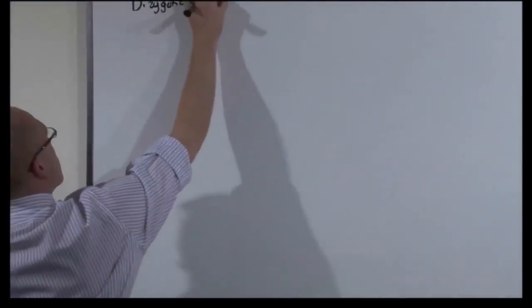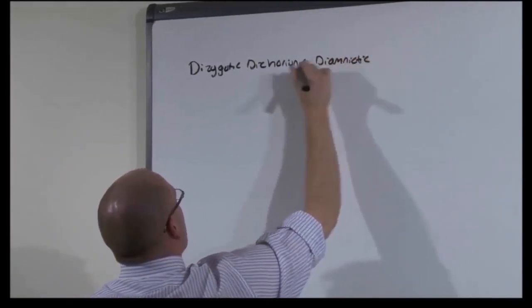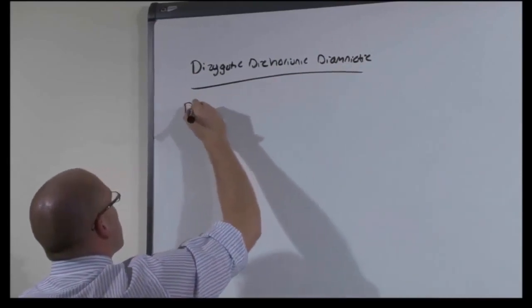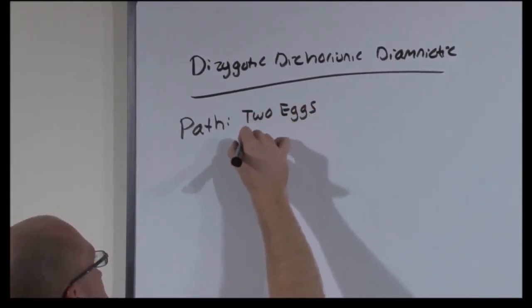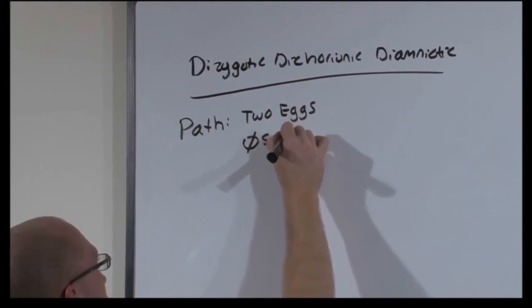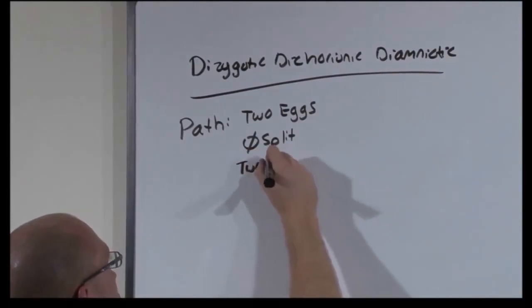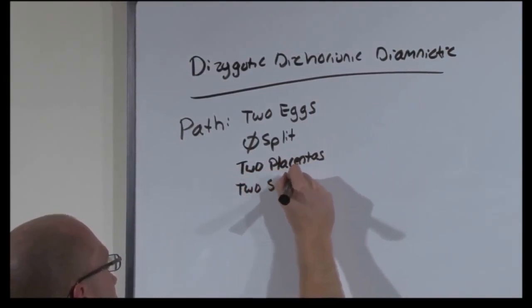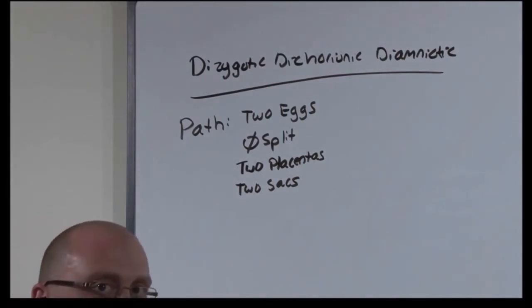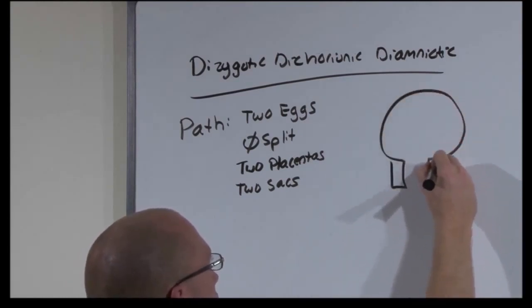Dizygotic, dichorionic, diamniotic, non-identical twins. By definition, they come from two eggs. And because they come from two eggs, there is no split at all. And because they are dichorionic, diamniotic, there are two placentas, dichorionic, and two sacs, diamniotic. They are essentially two completely different pregnancies occurring at the same time and the same uterus. Let's draw a picture of what that might look like before we talk about the risk that it confers.